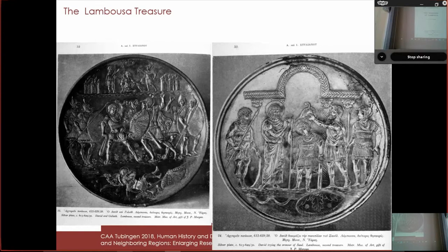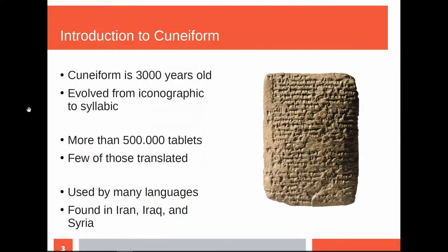As you have been already told this morning, cuneiform is a 3,000-year-old script. It evolved from different ways of writing, be it iconographic. For example, the character which was shown this morning is where you have a rain cloud and rain written with wedges. There are a lot of cuneiform tablets out there in today's Iran, Iraq, and Syria, and only few of those are translated or transliterated. Another point is that many languages used cuneiform, this form of writing, to encode messages.